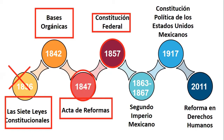Tenemos también otro antecedente importante: cuando México incumplió algunos pagos por las guerras, el Reino Unido, Francia y España se unieron para cobrar con intereses lo que México debía. Con los tratados de la soledad, el gobierno de Juárez llegó a un acuerdo con los acreedores, pero Francia tenía otras intenciones. A través de Napoleón III querían extender su imperio a América, aprovechando que los Estados Unidos se encontraban en una guerra civil, estableciéndose un segundo imperio encabezado por don Maximiliano de Habsburgo, del año 1863 al año 1867.